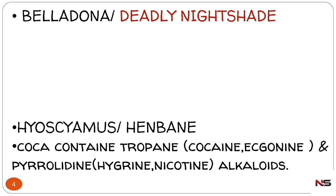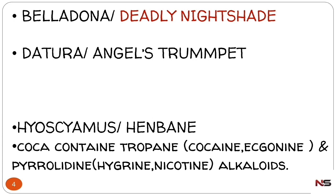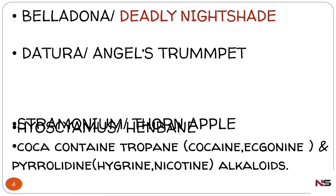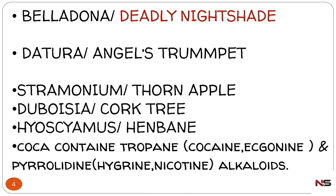Coca is used as a local anesthetic. Datura is also known as angel's trumpet. Stramonium is also known as stone apple. Duboisia's synonym is cork tree.